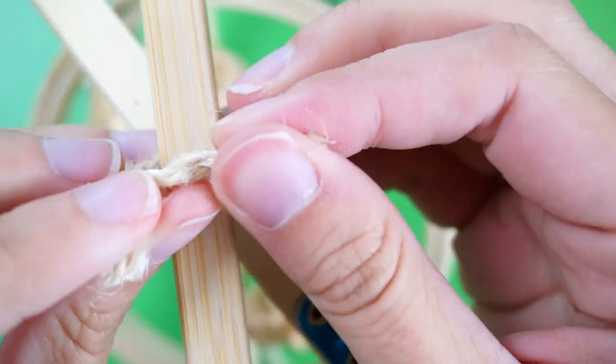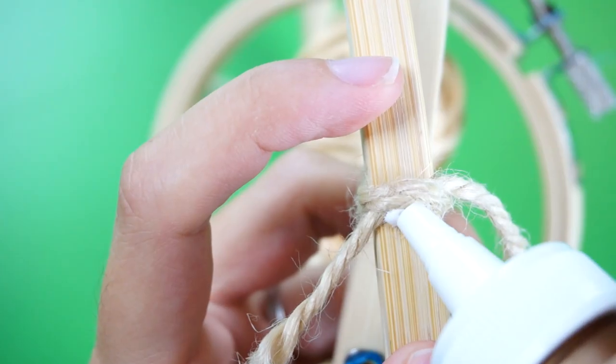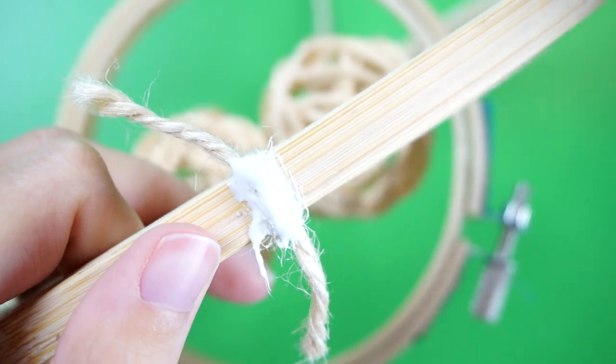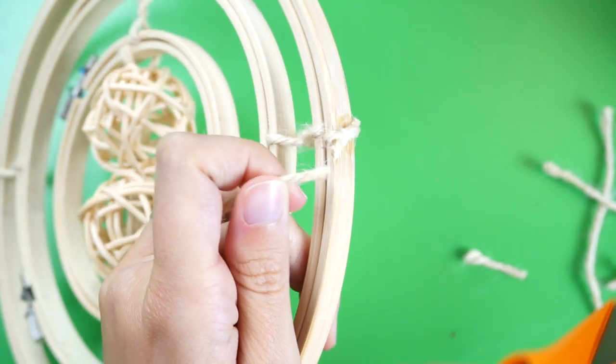Now tie the twine ends around the hoops they're attached to and secure the knots with tacky glue. Once the glue is dry, trim the loose ends with scissors.